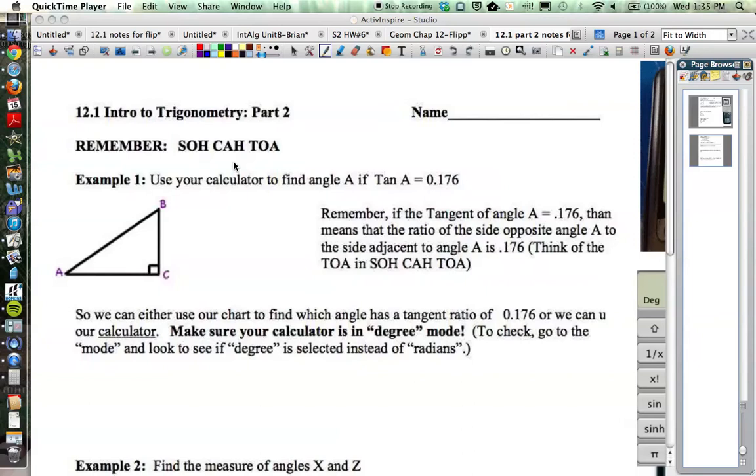So remember our SOH CAH TOA rules. Sine of an angle is opposite over hypotenuse, cosine is adjacent over hypotenuse, and tangent is opposite over adjacent. Example one says use your calculator to find angle A if the tangent of angle A is equal to 0.176. You did a problem just like this in class yesterday and in the previous notes.